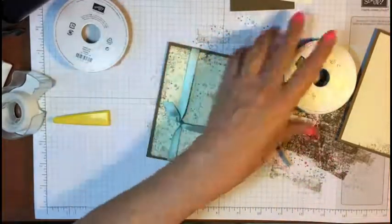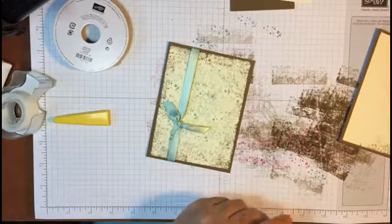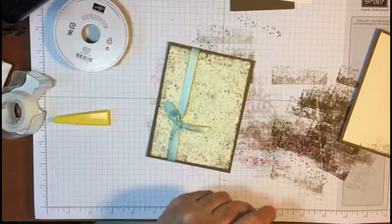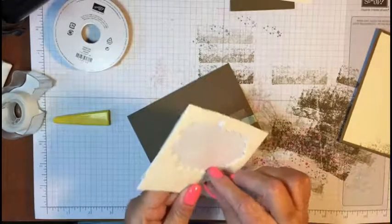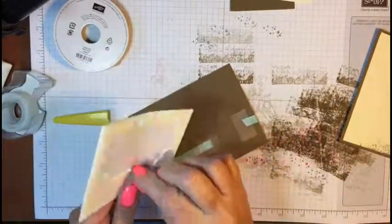Okay, let's just put some more tape on there. Got it? Cool. Good. And we're going to use our dimensionals and we're going to pop this up on the card.